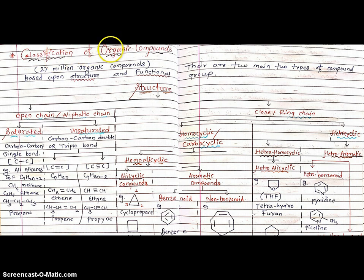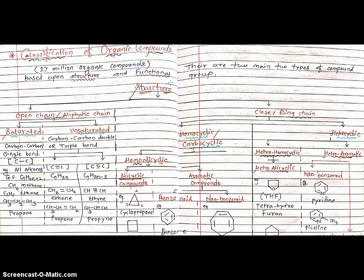Classification of organic compounds. In case of classification of organic compounds, there are two main types: based upon Structure and second, based upon Functional Group. In the universe, there are 27 million organic compounds. These organic compounds are further classified into these two basic types: based upon Structure and Functional Group.